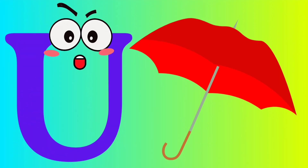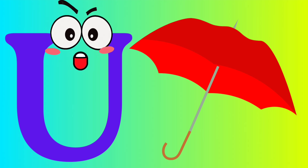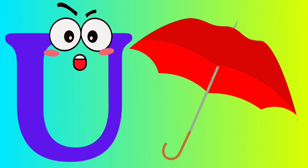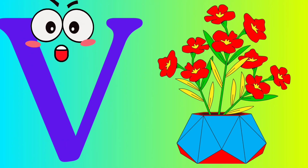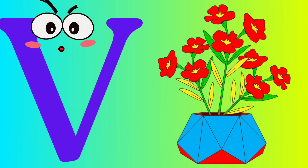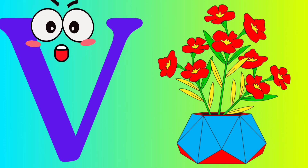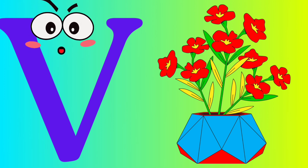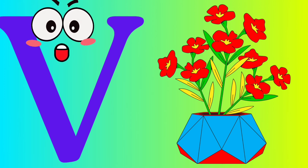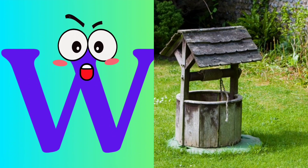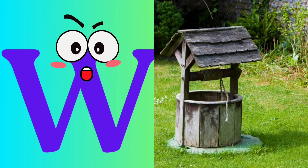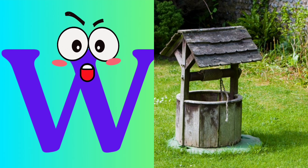U is for Umbrella. Umbrella. V is for Vase. Vase.